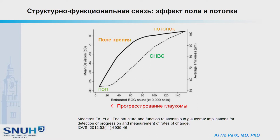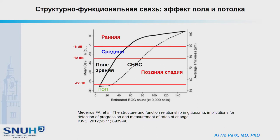However, this floor effect occurs in the very last part, at about minus 27 decibels. So even in advanced glaucoma, both visual field and RNFL thickness change can be a good tool to monitor glaucoma progression before the floor effect.